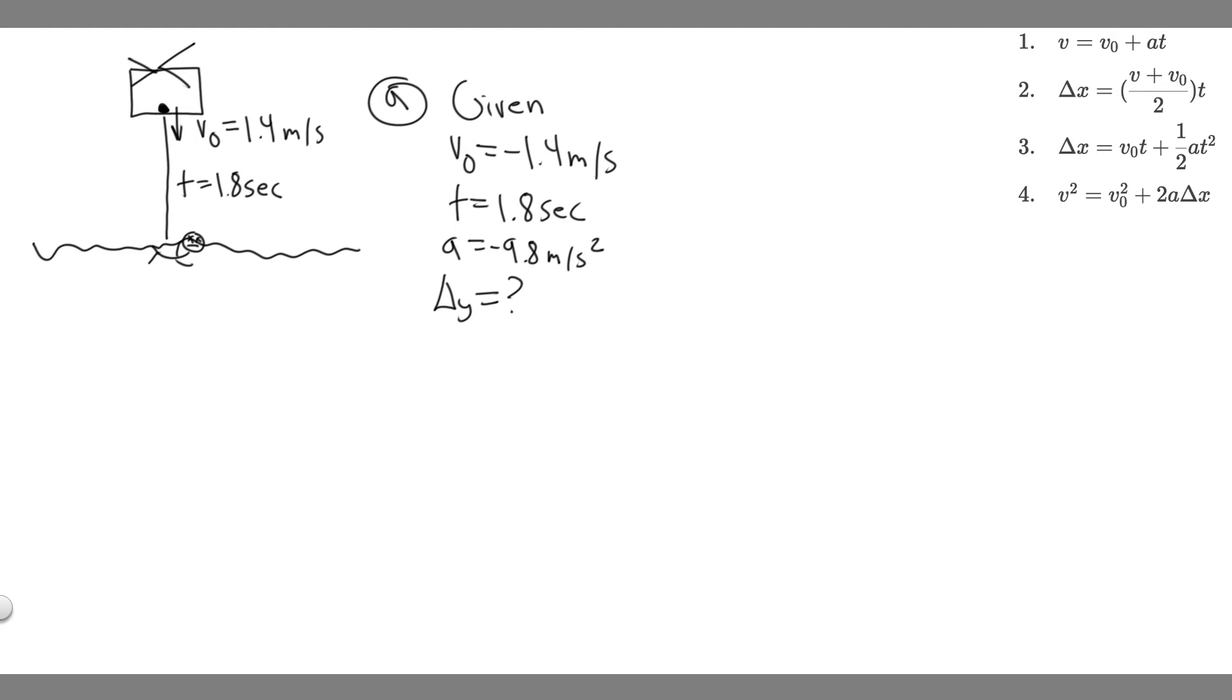Now that we have three kinematic variables and we want to solve for one, we just use one of the kinematic equations. We have v₀, t, and a, so the equation we should use is the third one. We can solve for delta y using: Δy = v₀t + ½at².